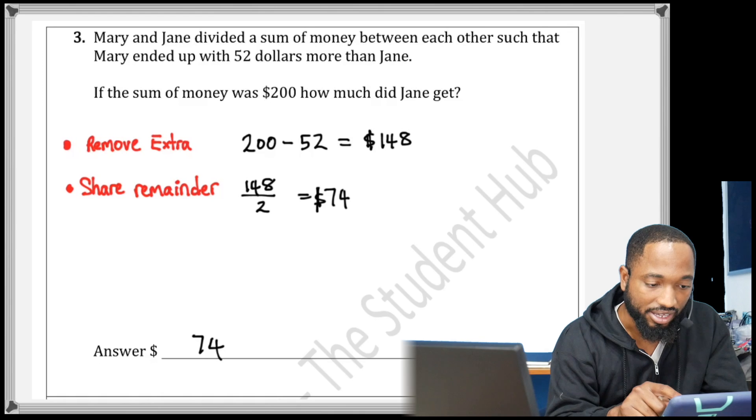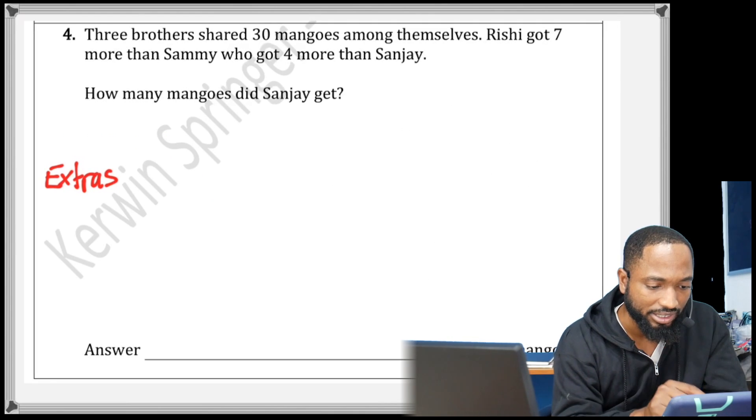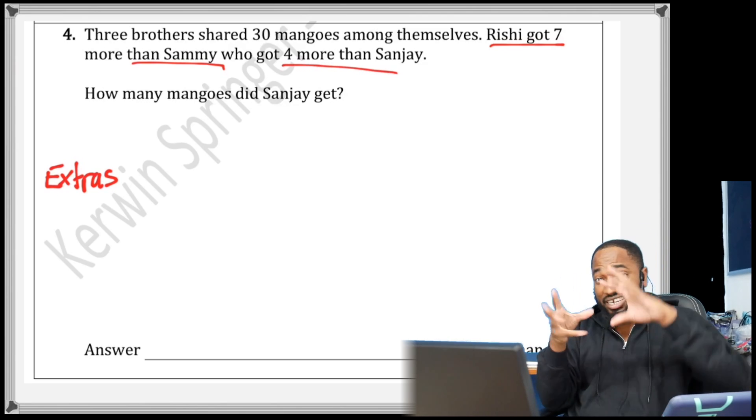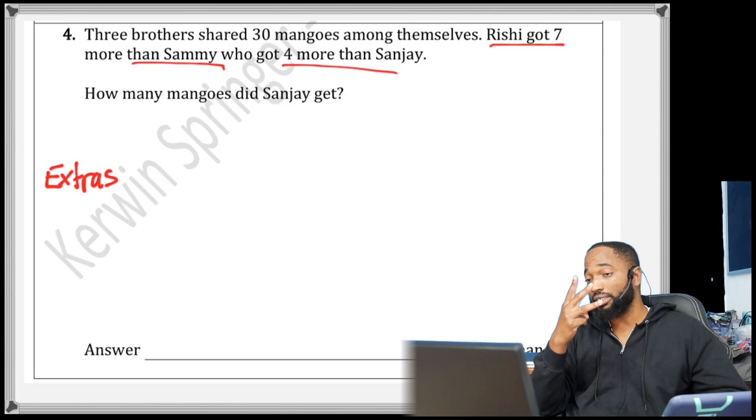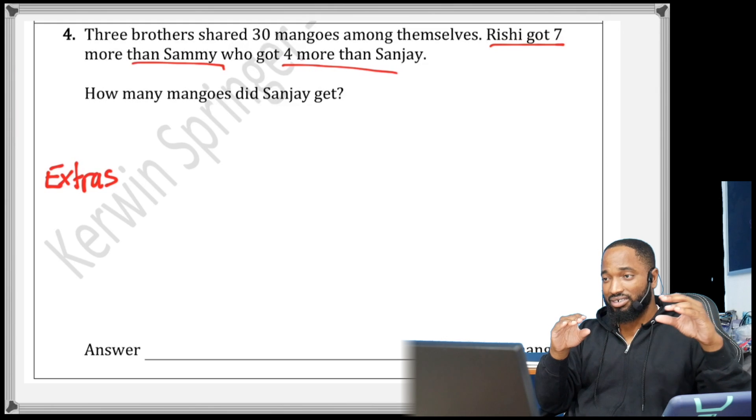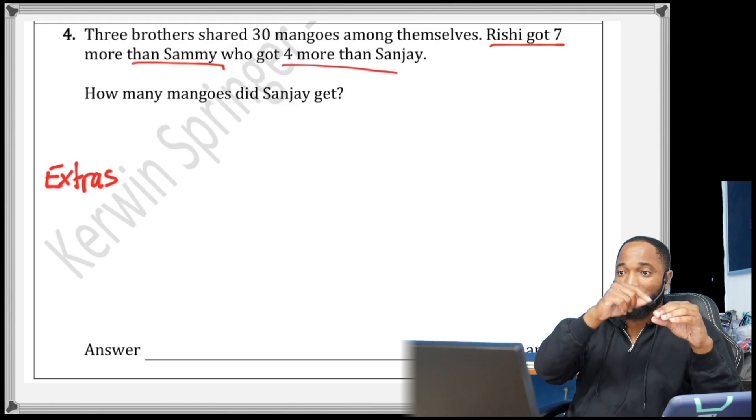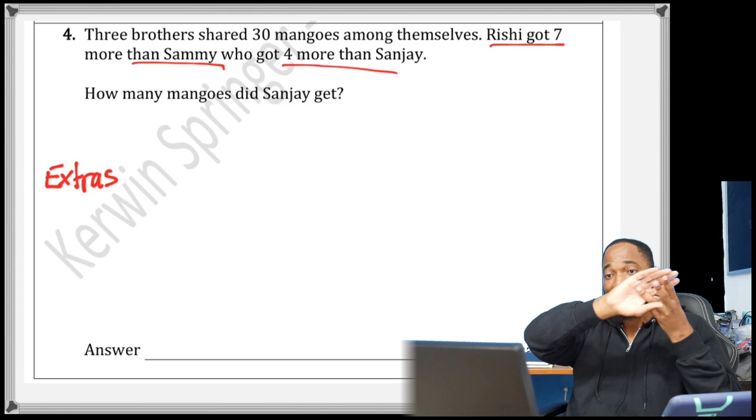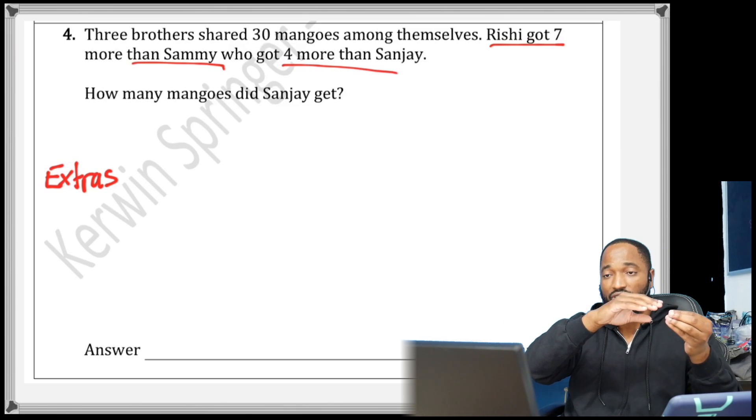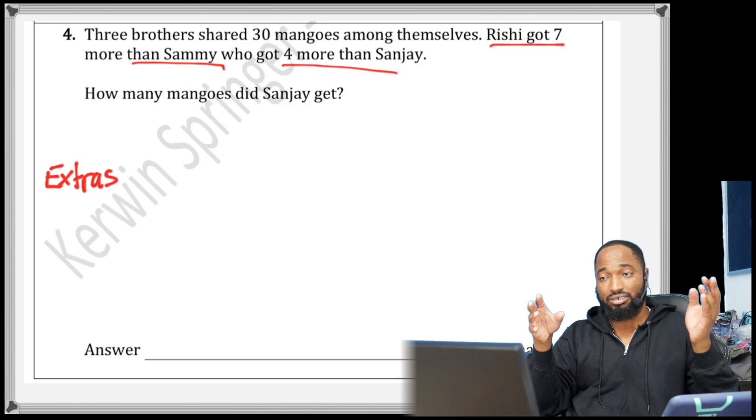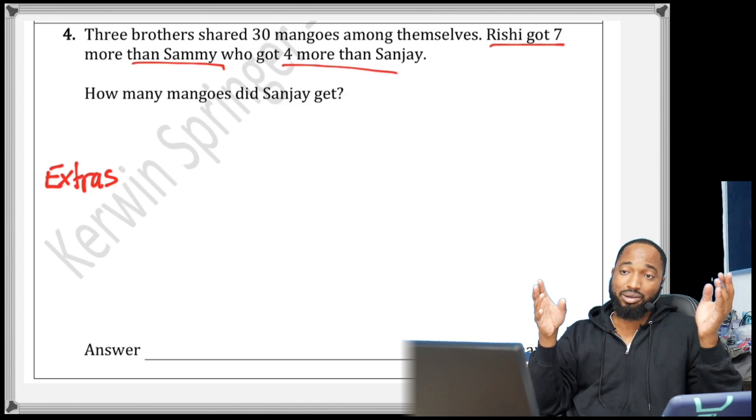Let's look at the next question. Three brothers shared 30 mangoes among themselves. Rishi got 7 more than Sammy who got 4 more than Sanjay. So this question is a different look because you have three participants and you see how they're sharing it up here. Rishi is getting 7 more than Sammy. Sammy got 4 more than Sanjay.